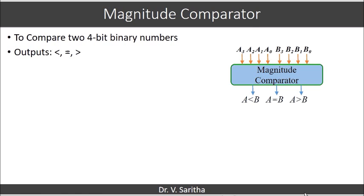In the block diagram of the magnitude comparator, A and B are the two 4-bit numbers being compared. A is represented as A3, A2, A1, A0, and B as B3, B2, B1, B0. The output could be A less than B, A equal to B, or A greater than B, and only one output can be 1 at a time.